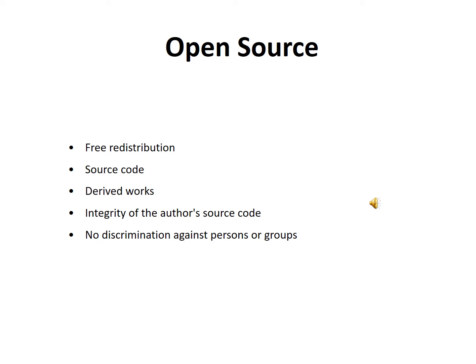There is no discrimination against the free use or distribution of the license. A license is not required for the distribution of open source software. Everybody can distribute it, and the license must not be specific to a product. The license must not contaminate other software — open source software must be totally free and must not be combined with other licensed software.